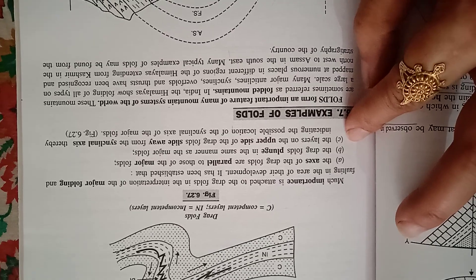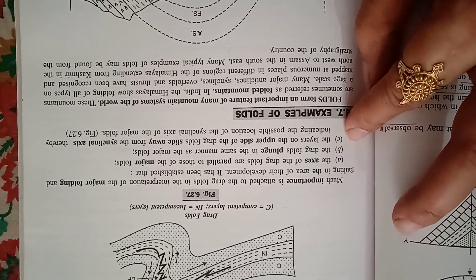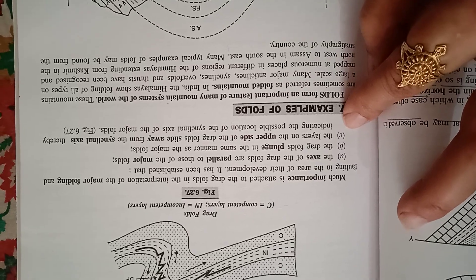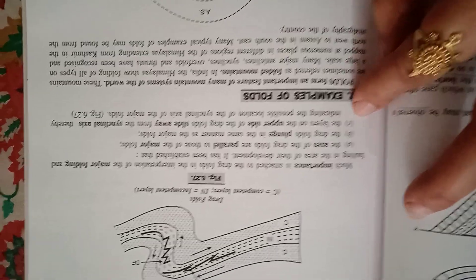The layer on the upper side of the drag folds slides away from the incline axis, thereby indicating the possible location of the incline axis of the major folds.